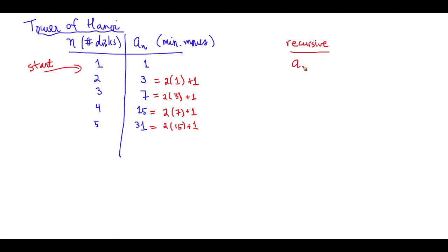For any a sub n, any minimum number of moves, if you want to know what is the minimum number of moves for n disks, you take the previous, the minimum number of moves for n minus one disk, multiply that by two, just as what we're doing here, here, and then adding one to it.